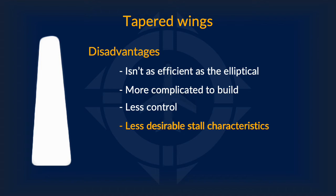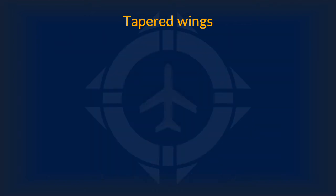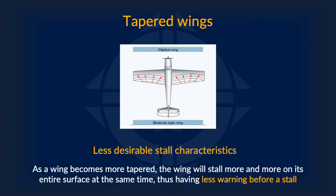Tapered wings also suffer the same problem regarding stall characteristics as elliptical wings. A tapered wing's undesirable stall characteristics arise from its uniform lift distribution. As a wing is more tapered, the lift is more uniformly distributed, as shown in this simplified graph. As a result, as a wing becomes more tapered, the wing stalls more and more on its entire surface at the same time. Uniform lift distribution means that stalling occurs uniformly throughout the wing, giving less warning before a stall and making it very dangerous.